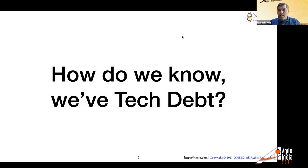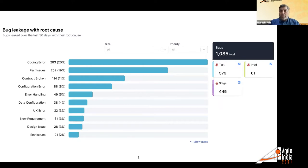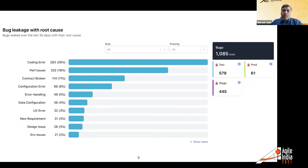Here's what we put together over the last few years to help us see whether we have tech debt and whether it's impacting us. The first thing is some way to visualize your bug leakage and the root causes associated with it. If you can visualize over the last 30 days what number of bugs leak through your various environments — test, staging, production — and then what the root causes are, filtered by priority, this can be a clear indicator of technical debt.